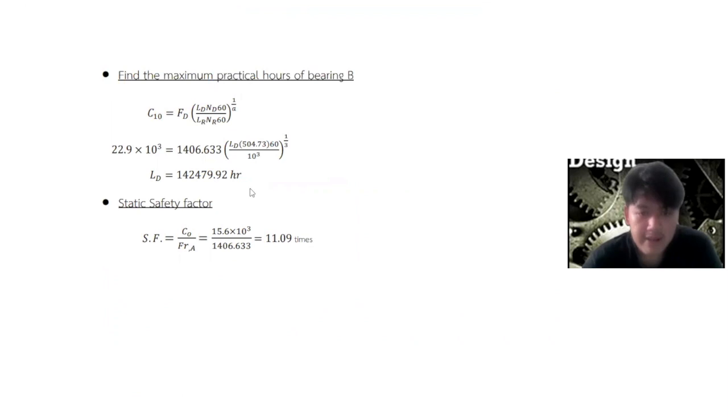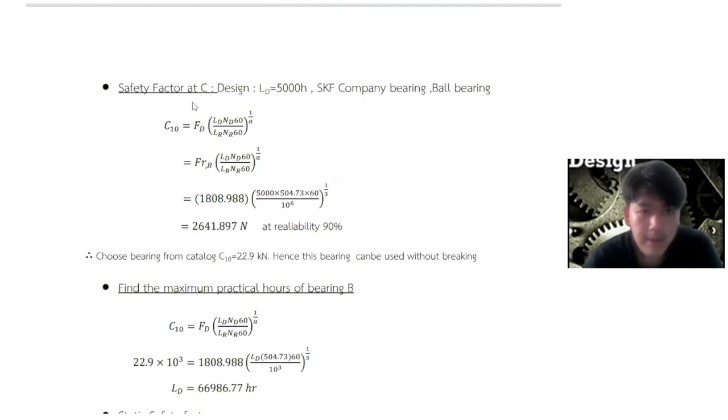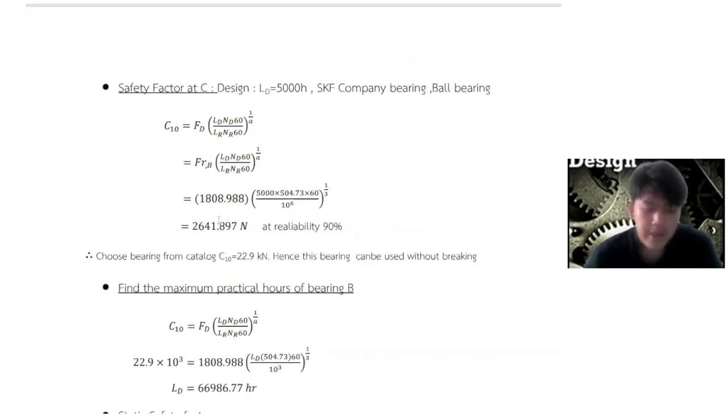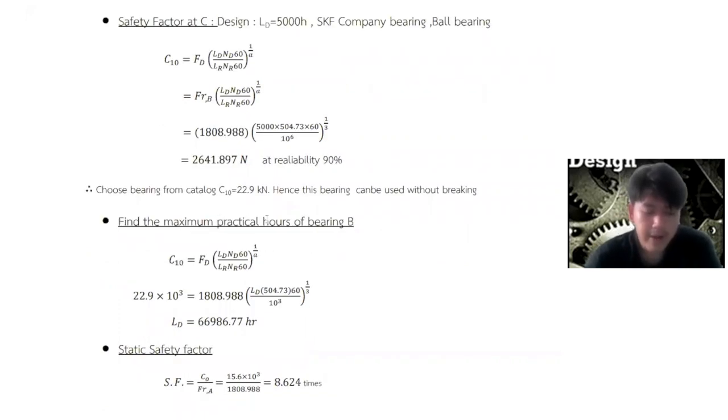For bearing C, we selected the critical load of bearing C. The safety factor in bearing C is 8.6 times the maximum practical hour of bearing, 67,000 hours. The result shows the bearing diameter 25 mm. It has a C10 22.9 kN. It has the minimum C10 in catalogue. Bearing can be loaded more than the actual load due to the fixed size of the bearing from the shaft component.